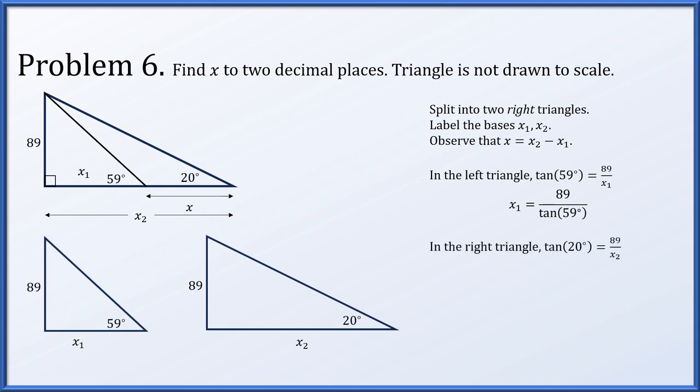And in the right triangle, the tangent of 20 degrees, opposite over adjacent, is 89 over x2. So x2 is 89 over the tangent of 20 degrees. Therefore, x2 minus x1, which is the missing side x, is 89 over the tangent of 20 degrees minus 89 over the tangent of 59 degrees, or approximately 191.05.